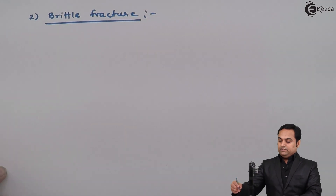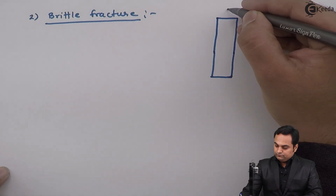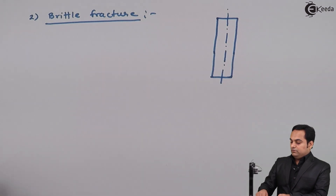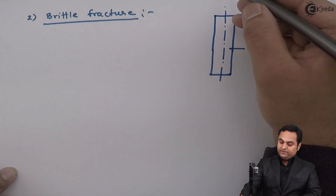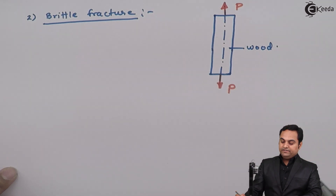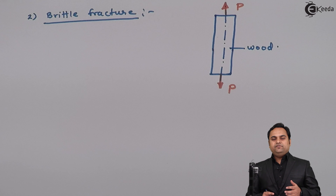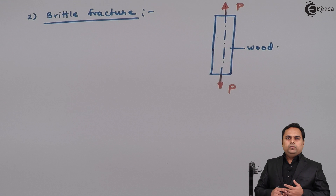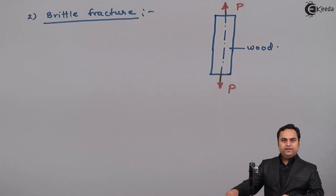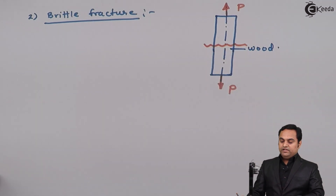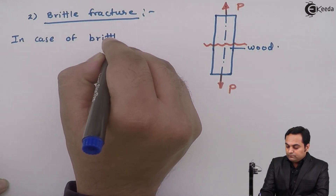Now let us see brittle fracture. Consider a material which is brittle — let this material be wood, because we know that wood is a brittle material. Let this wood be subjected to tensile load. When wood is subjected to tensile load, first of all it won't show any physical deformation. That is the property of brittle materials: when the load is applied and goes on increasing, the material will not show any physical change, but suddenly after some time, when the load increases, the material will break suddenly and that will result in its failure.